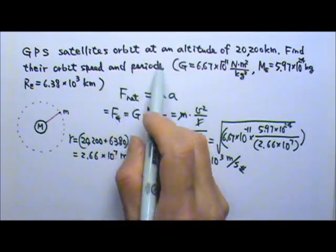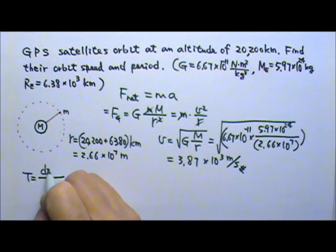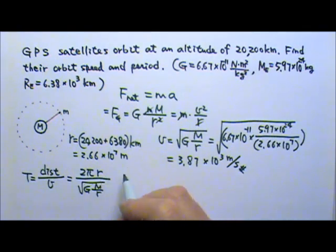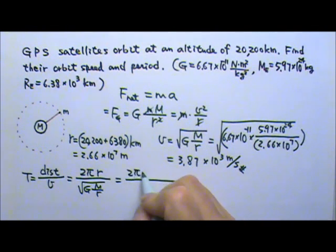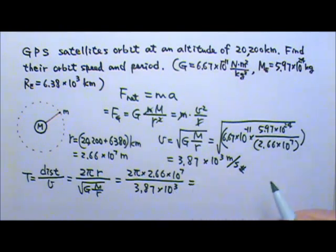And then we need to find the period. So this period is the time it takes to go around one circle, which will be the distance traveled divided by the speed. The distance traveled in one circle is 2 pi r. The speed is the square root of G M over r. So you can simplify this and then plug the numbers in. Or we can just plug the numbers in here because we already have the speed. So this will be 2 pi, the radius is 2.66 times 10 to the 7th. The speed is 3.87 times 10 to the 3rd. So we get the time to be 4.32 times 10 to the 4th.